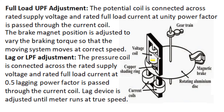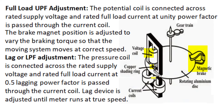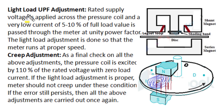After preliminary light load adjustment, full load unity power factor conditions are adjusted. Rated voltage is supplied to the voltage coil and full load current at unity power factor is passed through the current coil. The position of the brake magnet is adjusted to get accuracy in energy meter readings — this is called full load unity power factor adjustment. Next, low power factor adjustment, also called shading band adjustment or lag error correction, is done. Rated voltage and rated current are supplied, but with current lagging voltage by 60 degrees (0.5 lagging power factor), and the position of the copper shading band is adjusted for readings within tolerable error.